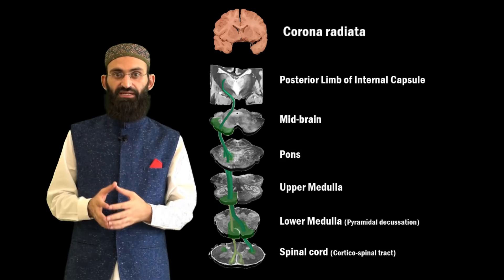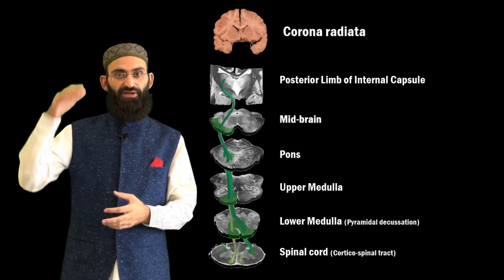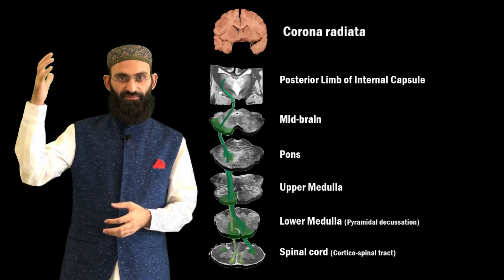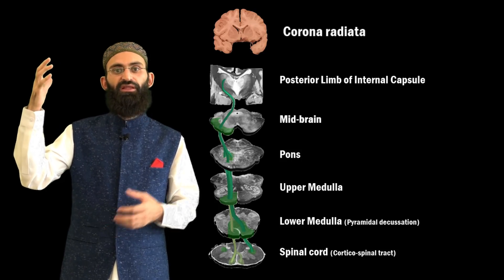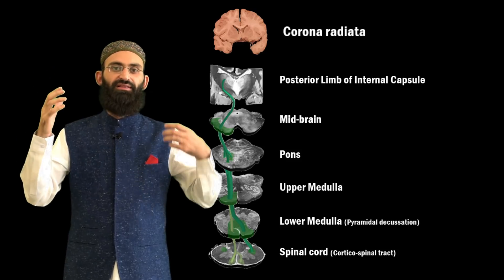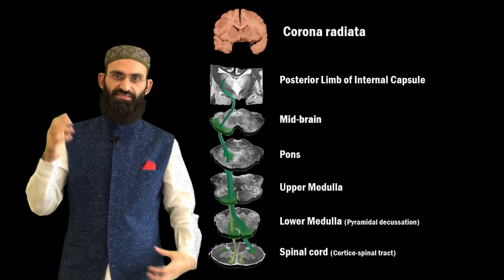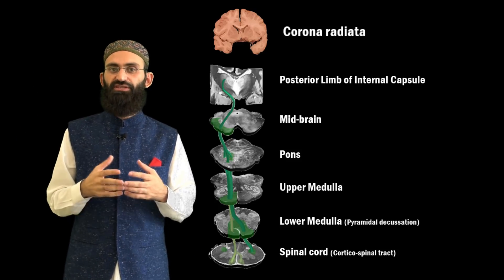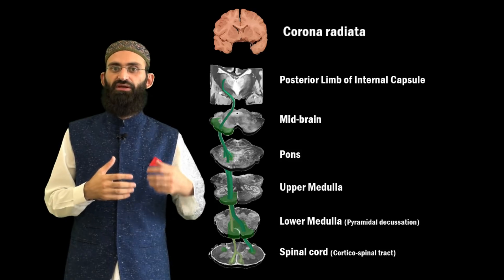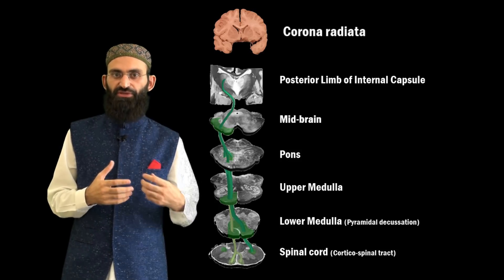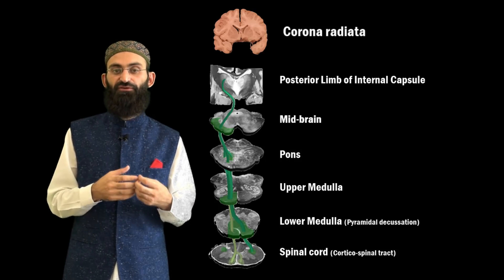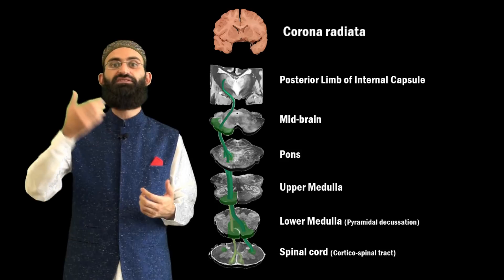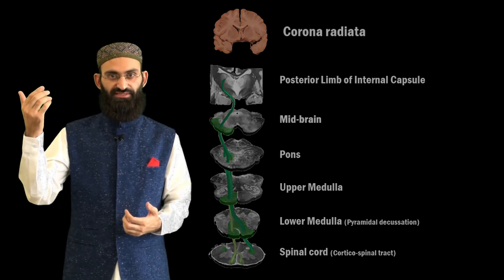This means that right-sided pyramidal neurons will innervate left-sided spinal motor nuclei. Spinal motor nuclei receive their innervation only from the contralateral side.